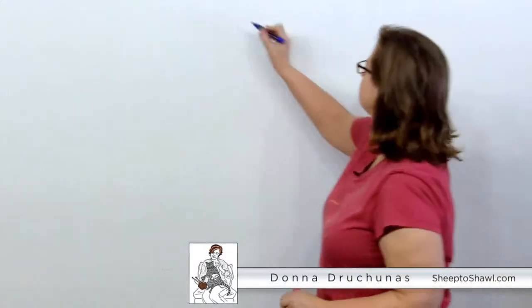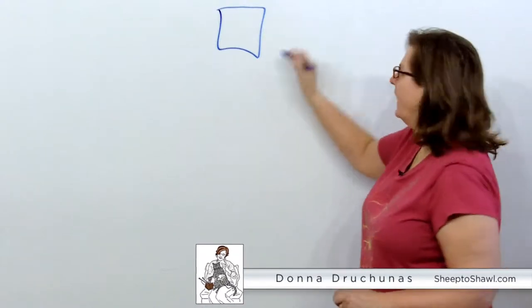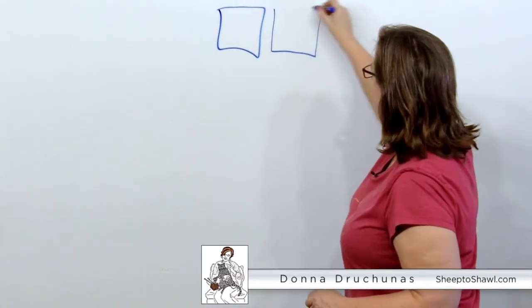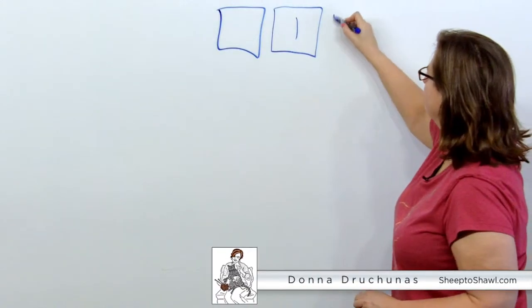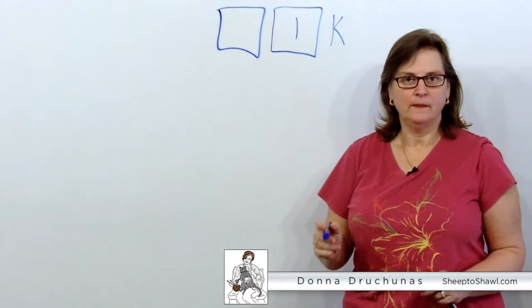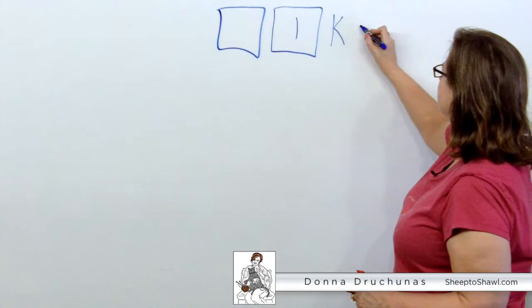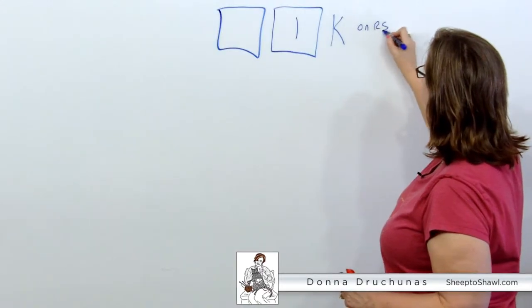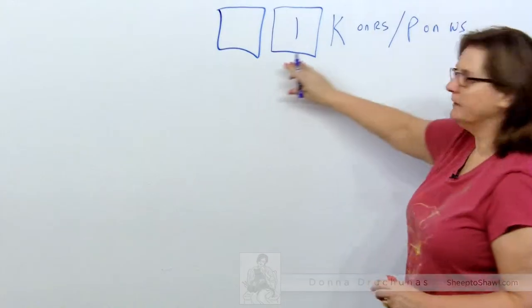We'll start with the basic ones first. We have a blank square or sometimes a vertical line, and this is the symbol for knit. What you have to remember though, the trick to this, is if you're knitting back and forth, it's knit on the right side, purl on the wrong side, because this is actually stockinette stitch.